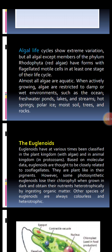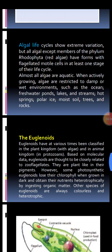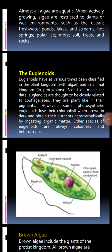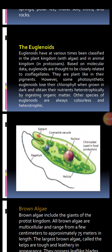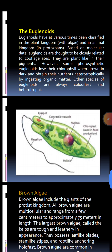Next come euglenoids — members of which include Euglena, which have flagella. Euglenoids have at various times been classified in the plant kingdom with algae because they have green pigment chlorophyll, and also in the animal kingdom as protozoans. Based on their molecular data, euglenoids are thought to be closely related to zooflagellates, because they are also animal-like and have flagella.